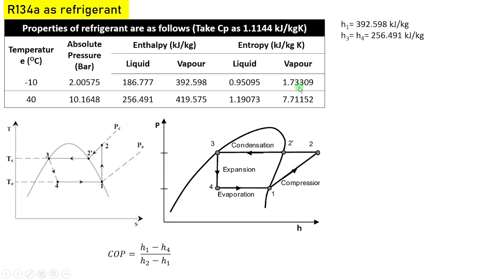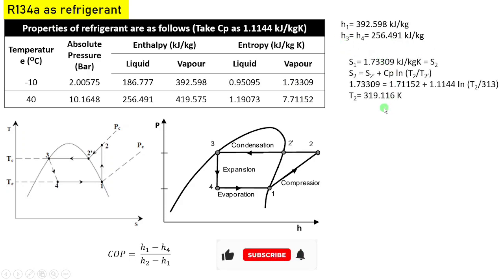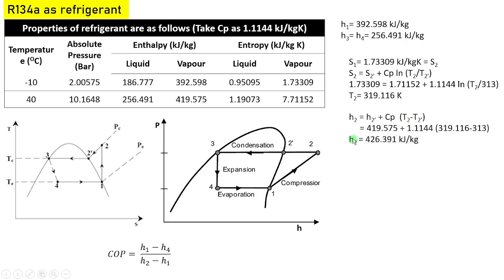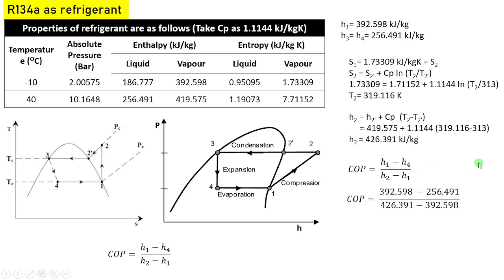By using the table, we can find out the enthalpy at point numbers 1 and 4. Using the entropy, we can find out the higher temperature T2, and by using that temperature T2, we can find out the enthalpy at point number 2. So COP can be found by putting these values into the equation. In this case, COP by using the analytical method is 4.03.